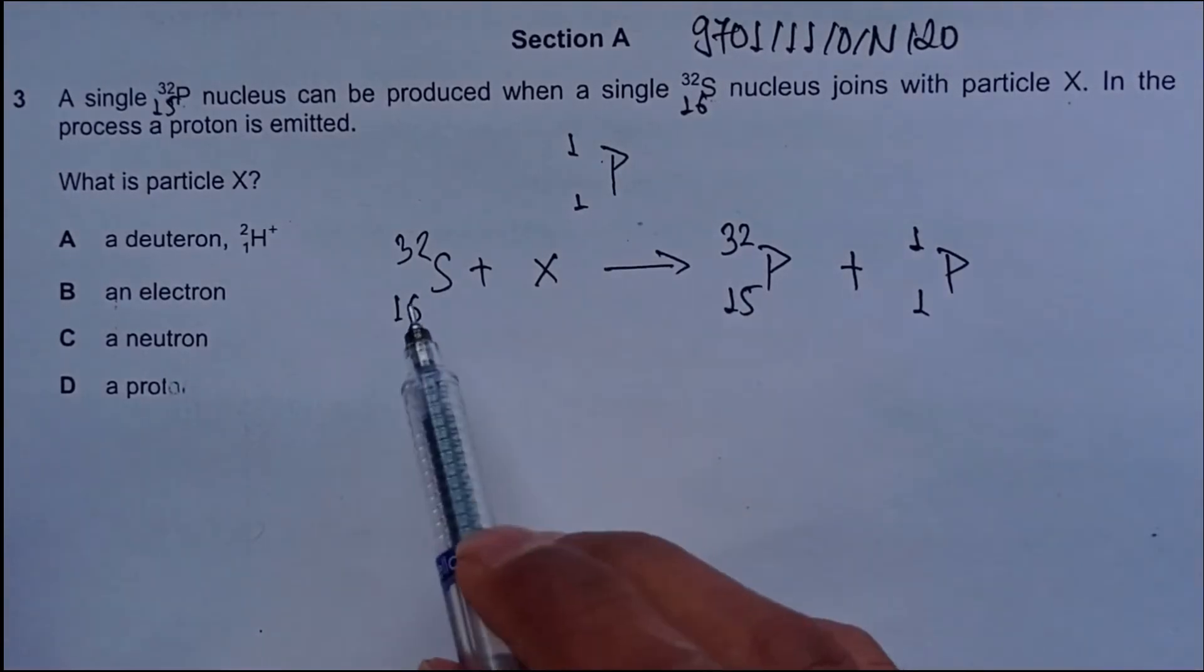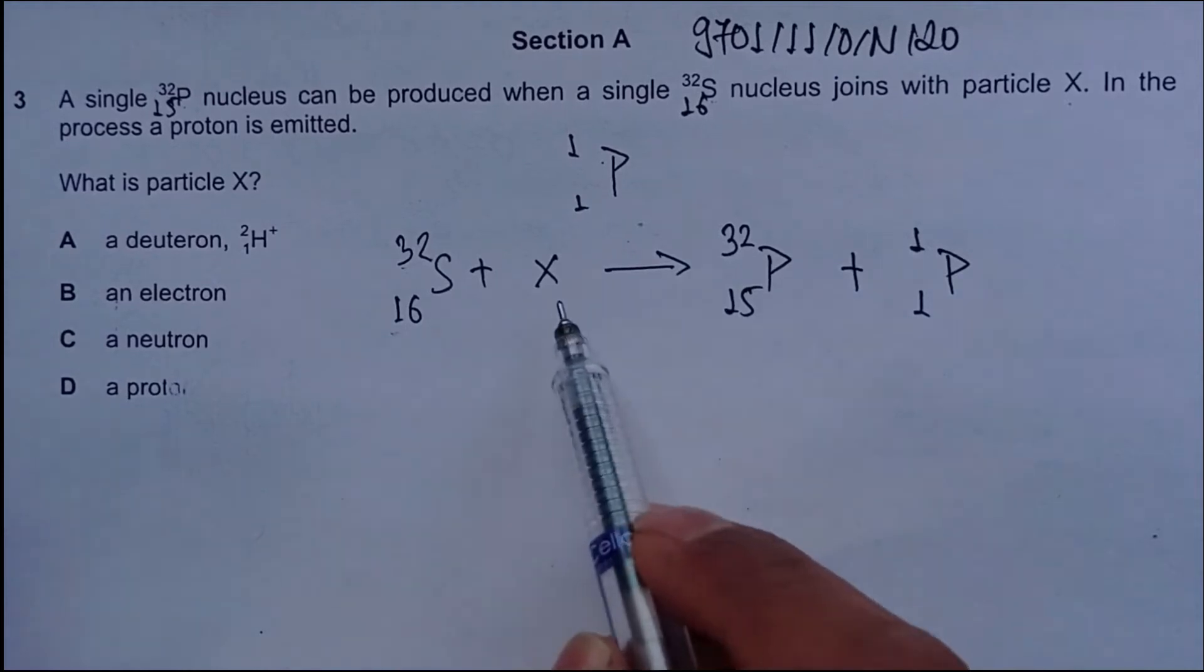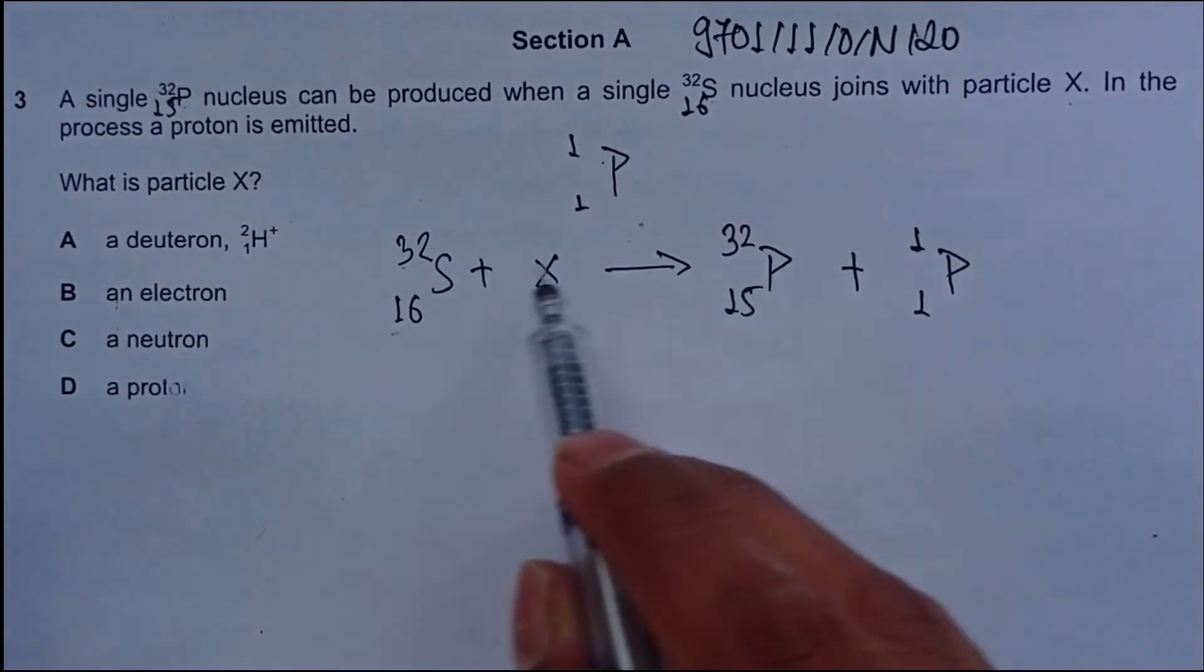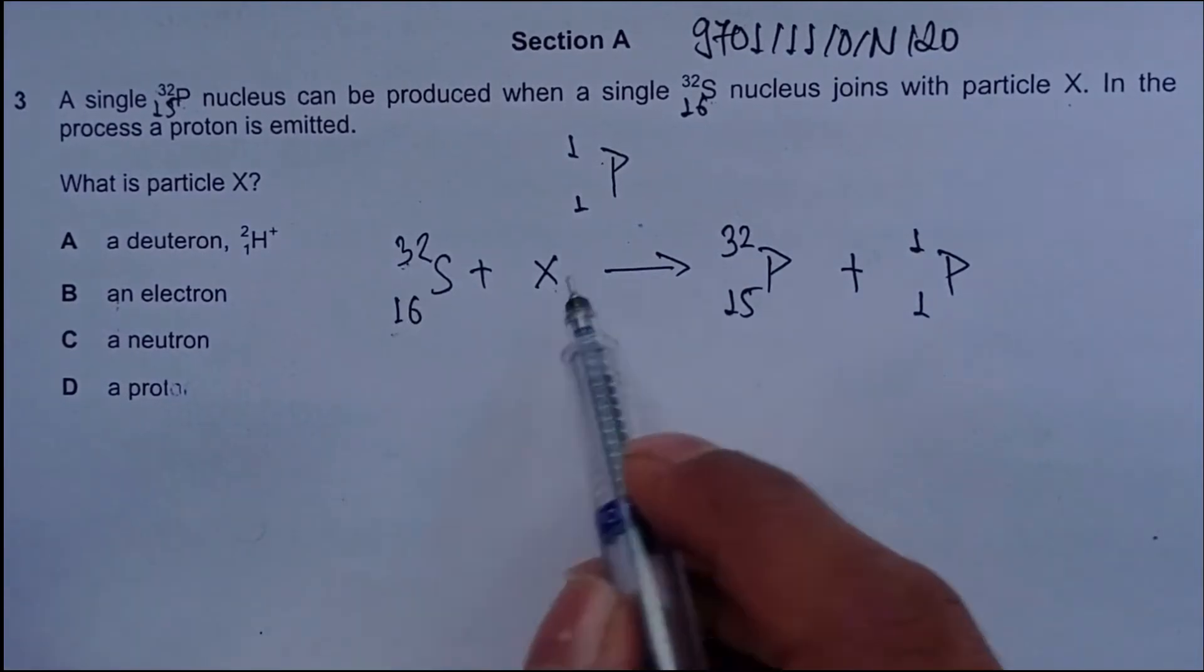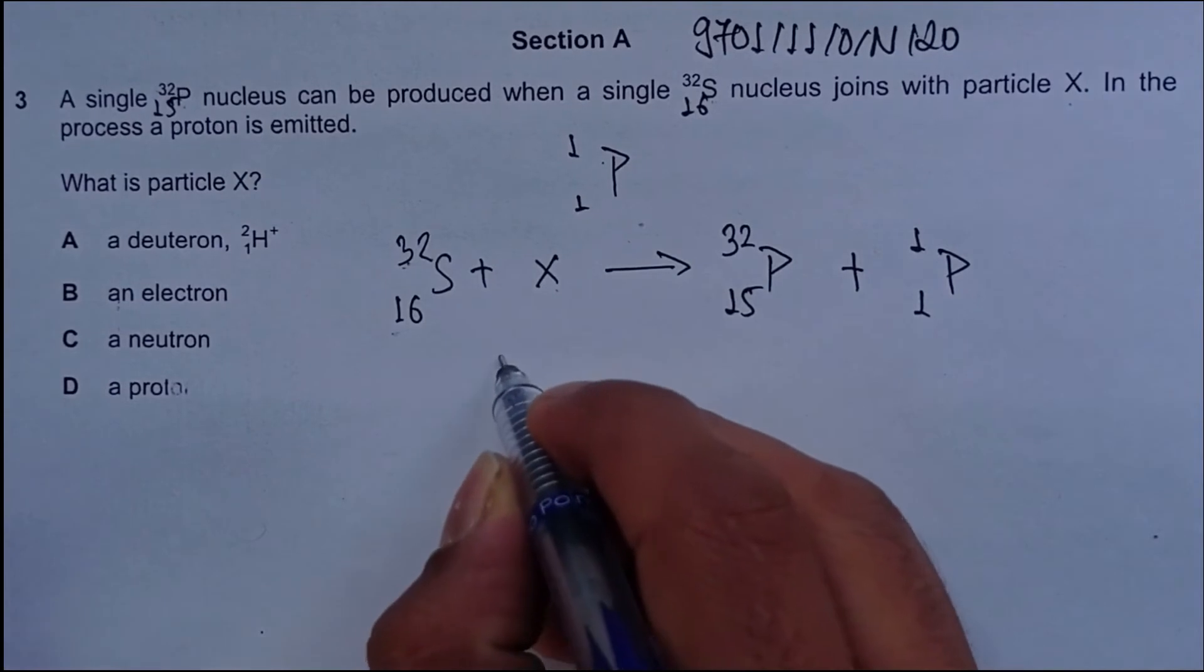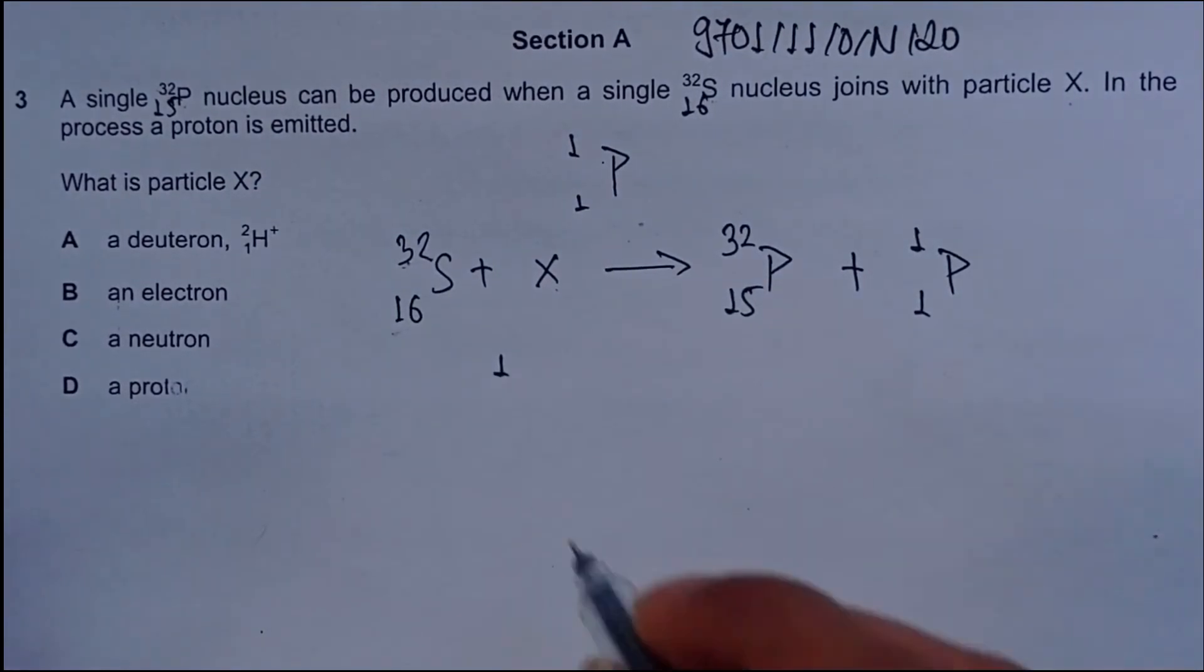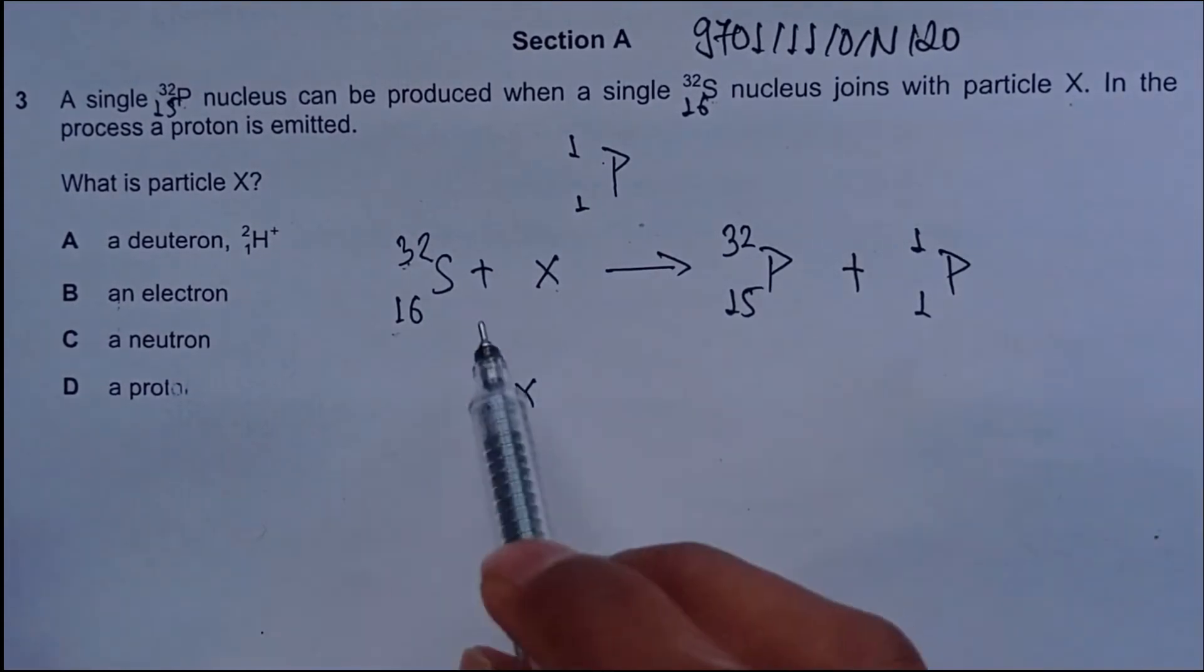Now all we have to do is balance the number of nucleons and number of protons to deduce X. We have 32 nucleons on the reactant side, excluding X, and 33 nucleons on products. So we need to have only one nucleon on X.